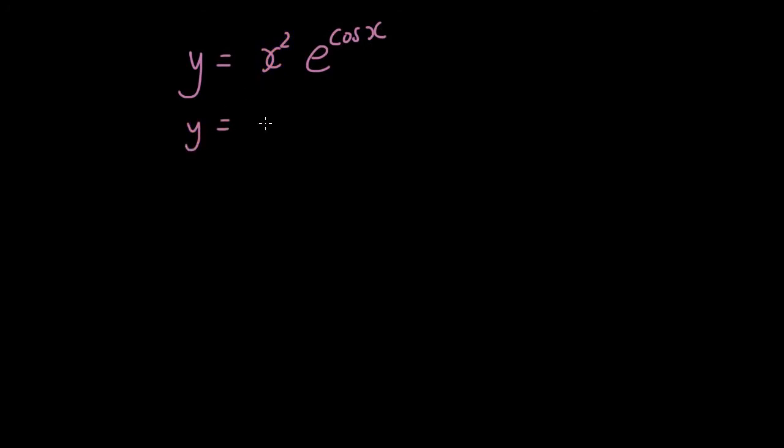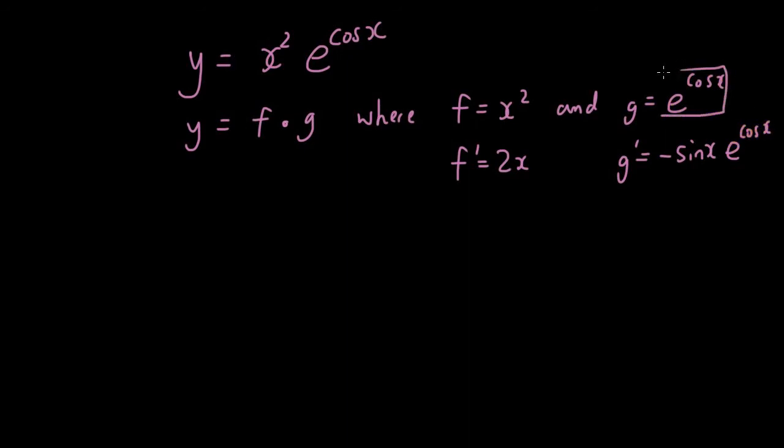So I have y equals f times g, where f equals x squared and g equals e to the power of cosine x. You're going to differentiate each one. So f dash equals 2x, and g dash equals... now cosine x differentiates into negative sine x times e cosine x. So copy that original function down.